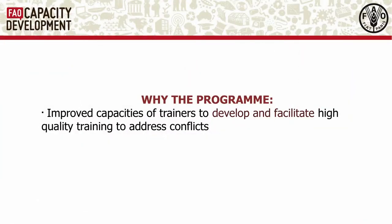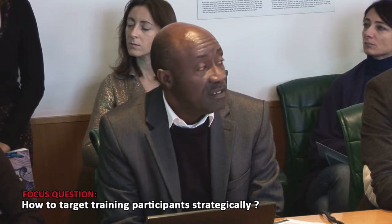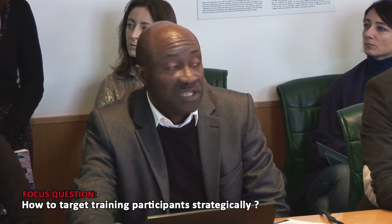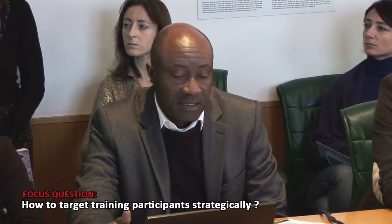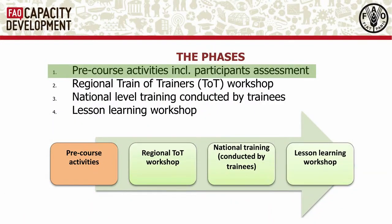The aim of the program is mainly to strengthen the capacities of selected trainers for them to be able to develop and facilitate high-quality training on conflict management, particularly in the forestry sector. This training is delivered in four phases that run over a period of one year, with effective engagement of about six to seven weeks.